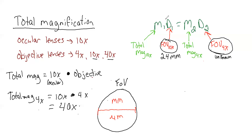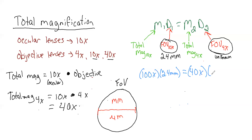So we're going to set up the math — a simple algebra equation. The total magnification at 10x is 10 times 10, which is 100x. We multiply that times the measured diameter of 2.4 millimeters, and set that equal to the other side. We don't know our field of view at 4x — that is our unknown — but we do know the total magnification at 4x is 40x. We multiply 40x times our unknown, and I'll use y instead of x as the variable to avoid confusion with all the magnification x's.